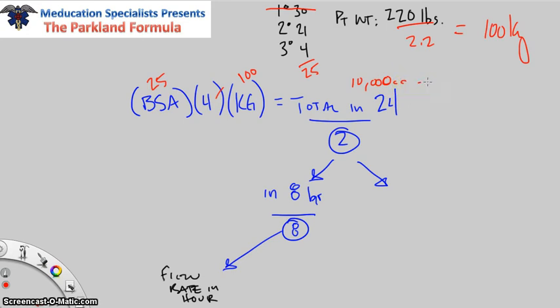10,000 cc's, which also equals 10 liters. So 10 liter bags of saline this person has to have in 24 hours. Once we get that 10,000, we divide by 2. So 10,000 divided by 2 is 5,000. In 8 hours, the first 8 hours, they need to get 5 liters. In the next 16 after that, they need to get another 5,000. But usually in critical care transport or ground ALS transport, you're only dealing with them the first hour in ALS or maybe the first couple hours in critical care. We divide by 2, get 5,000, then divide by 8 and get 625.